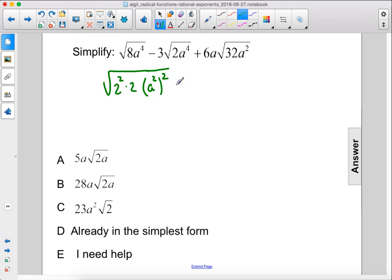So then next term has 3 times the square root of 2, and we can rewrite a to the fourth as a squared squared plus 6a times the square root. 32 is 16 times 2. 16 is 4 squared. So 4 squared times 2 is 32 times a squared.